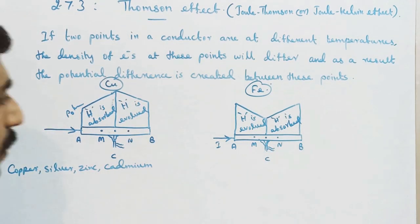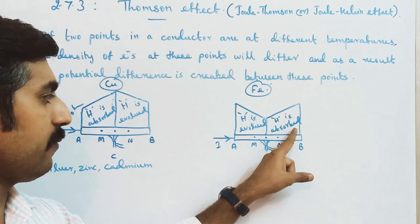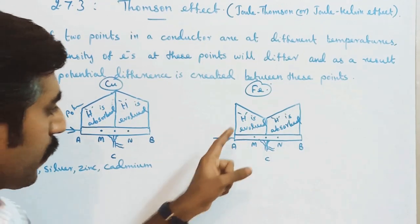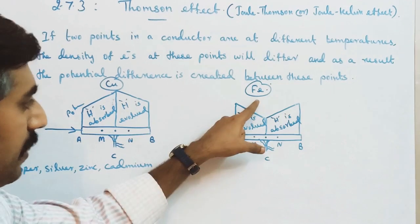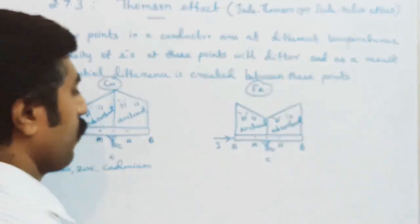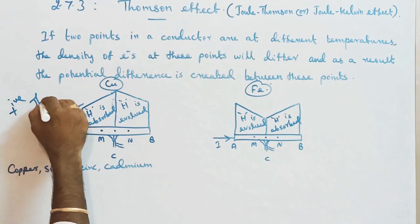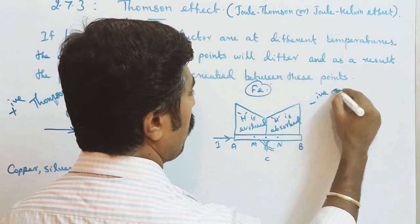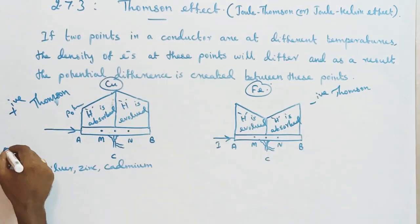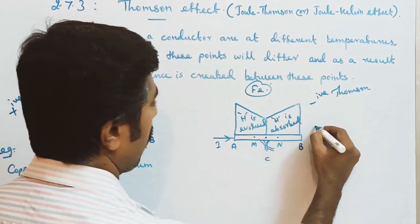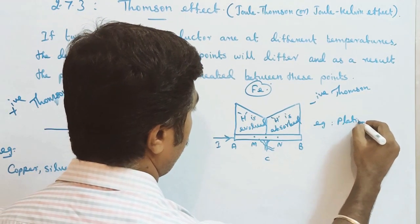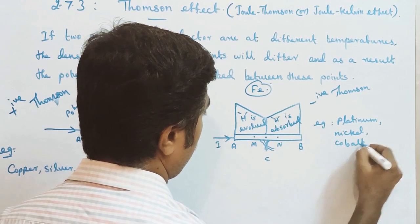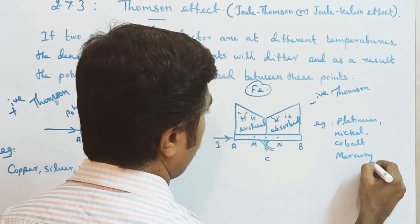In the iron bar, from A to C heat is evolved first and from C to B heat is absorbed. This is the Negative Thomson effect. Examples of metals showing negative Thomson effect are platinum, nickel, cobalt, and mercury.